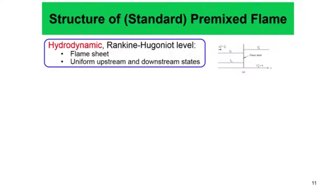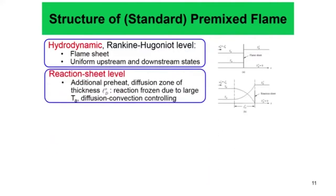Now, in the hydrodynamic limit — that is, at the Rankine-Hugoniot level — we considered a flame sheet with uniform upstream and downstream states separated by a flame sheet. At the reaction sheet level, we considered the flame had a preheat zone of finite thickness where the temperature increases, but the reaction zone is still very, very narrow.